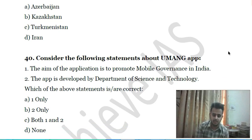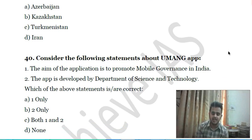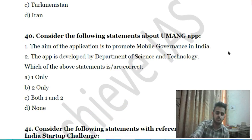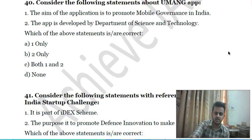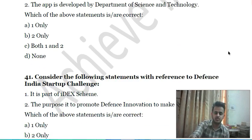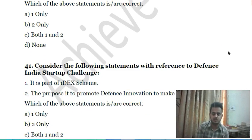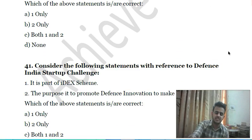Thirty-ninth question: consider the following statements about the UMANG app — first, the aim of the application is to promote mobile governance in India; second, the app is developed by the Department of Science and Technology. Choose the correct answer.